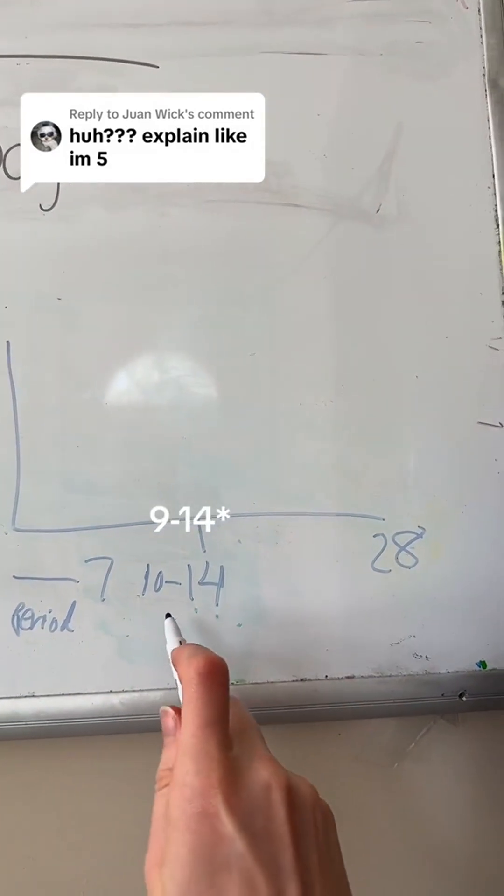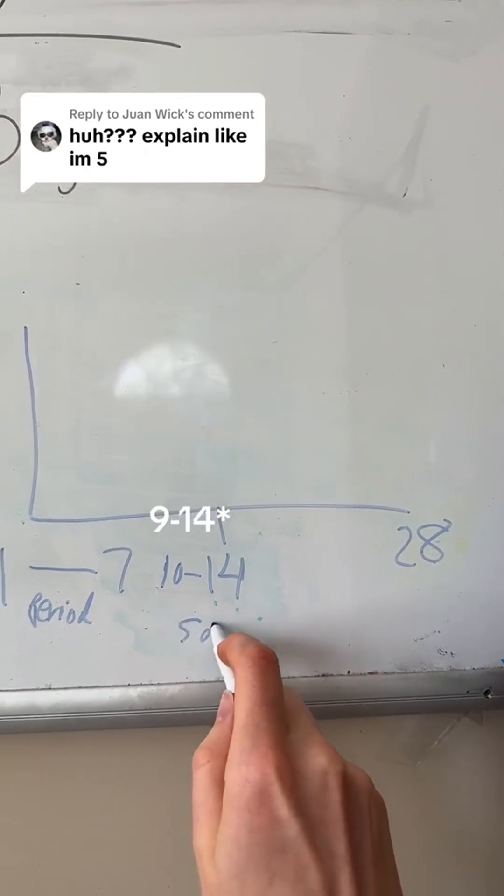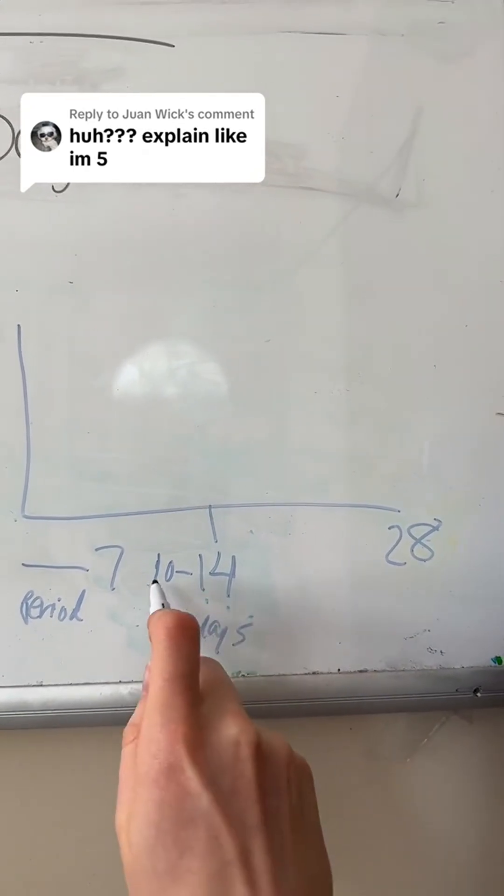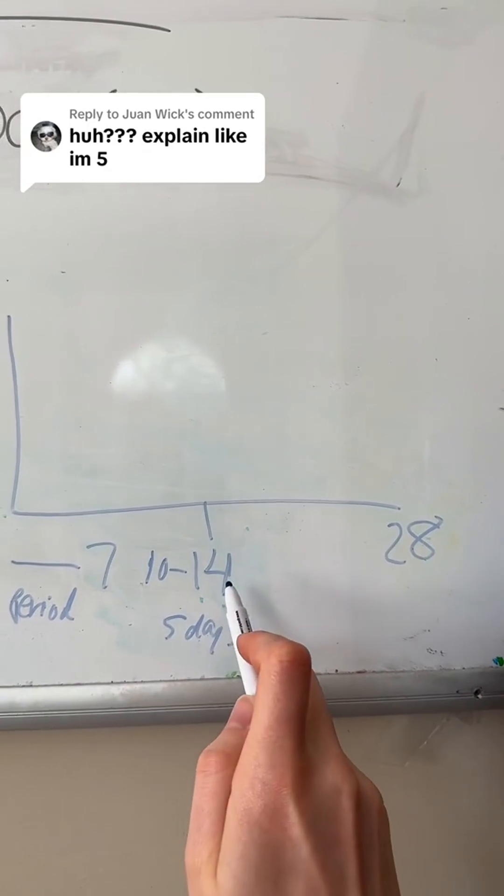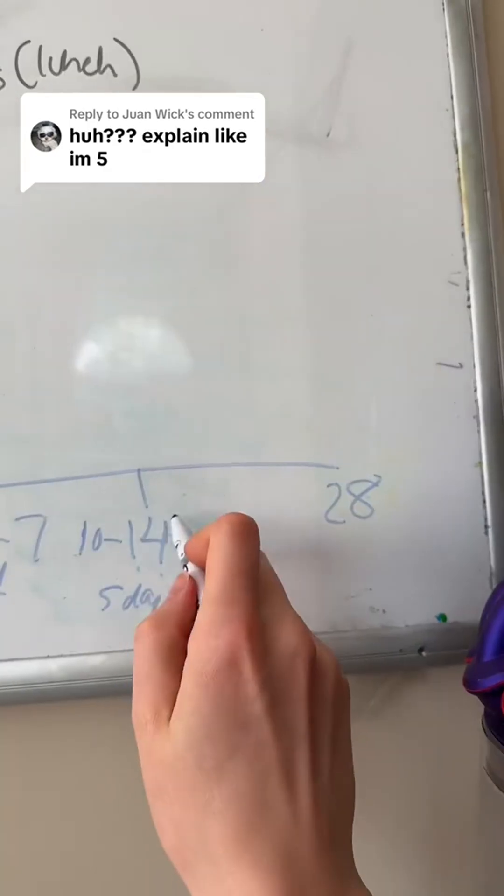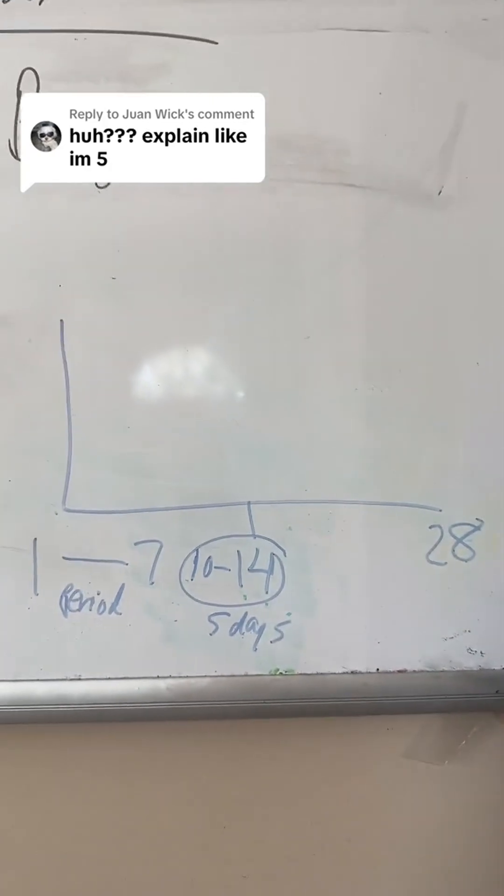This is because sperm can live in you for up to five days. So let's say you have sex on day 10, you could get pregnant when you ovulate on day 14. So this here we call your fertile window.